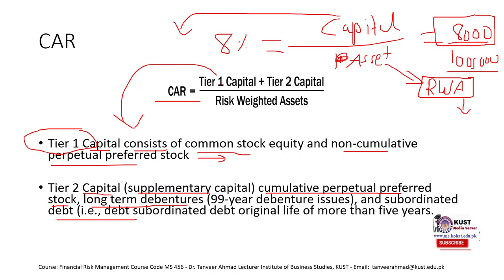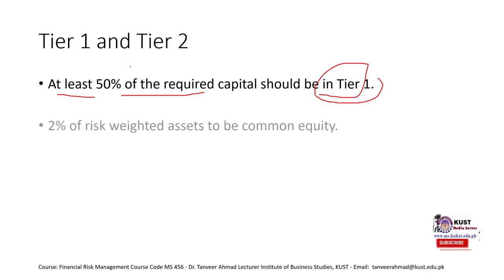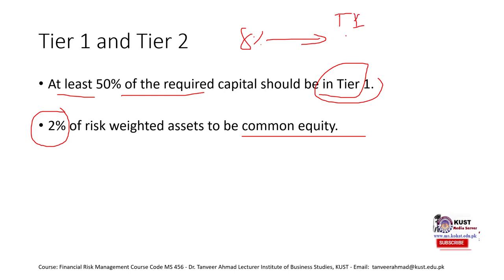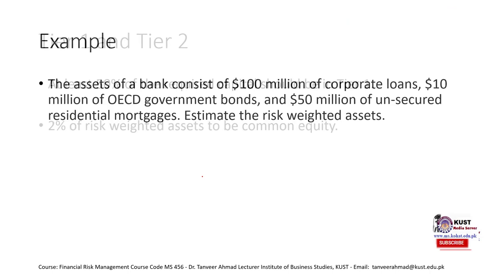Basel Accord I also defined the minimum composition of capital. At least 50 percent of total capital must be Tier 1 — the less risky capital — and can be higher. Additionally, at least 50 percent of that Tier 1 capital must be common equity. This means: of the 8% total capital requirement, at least 4% must be Tier 1, and at least 2% must be common equity.